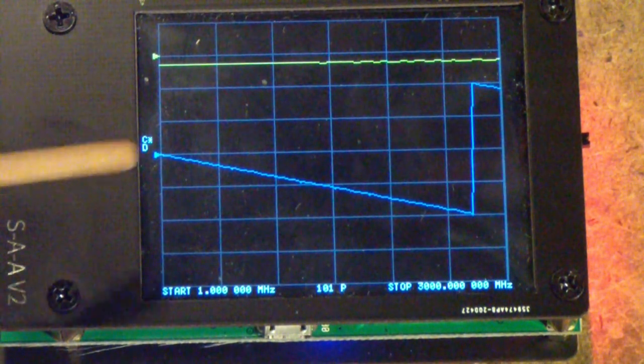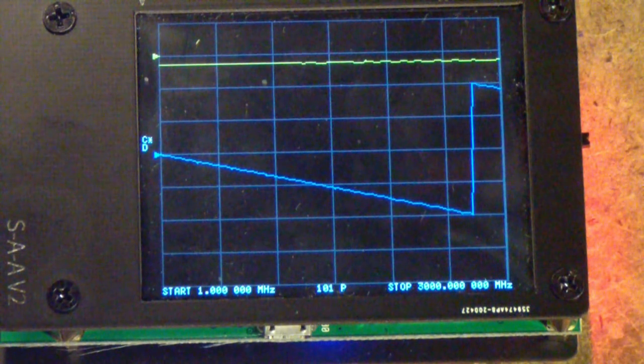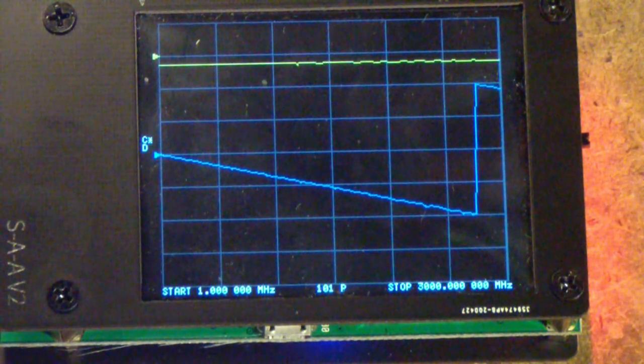And the blue trace is the phase of S21. In other words, it's the phase of the transmission. And you notice that just as we saw, oh, by the way, we're also, we're doing the mini circuits attenuator on this one.